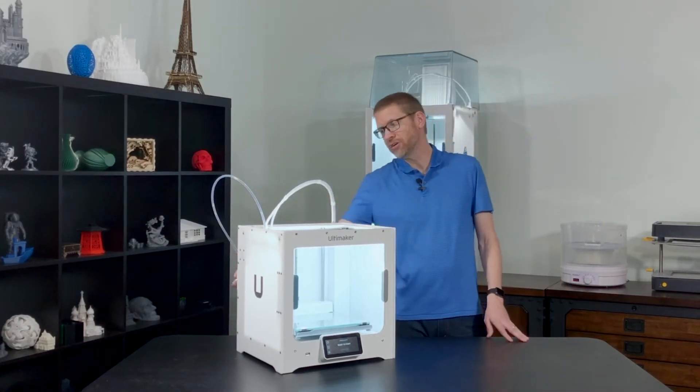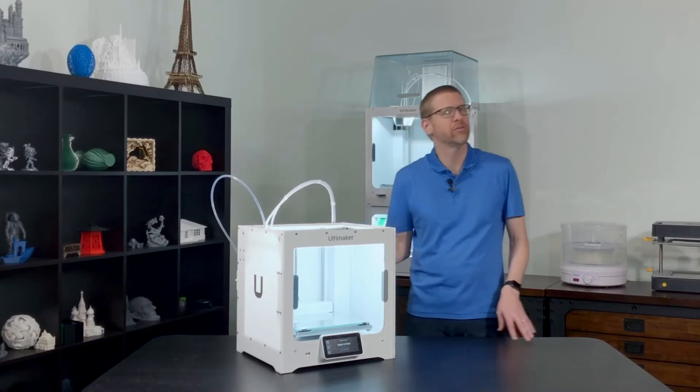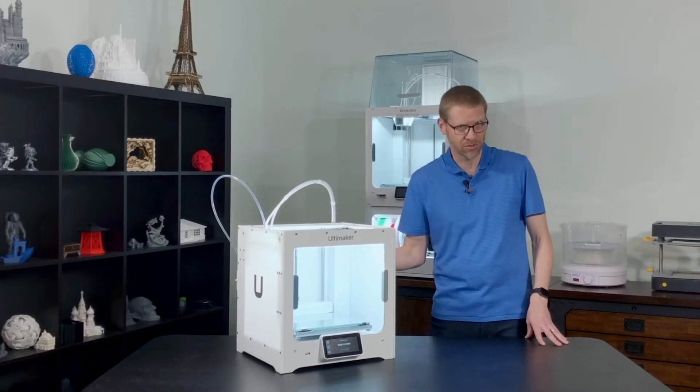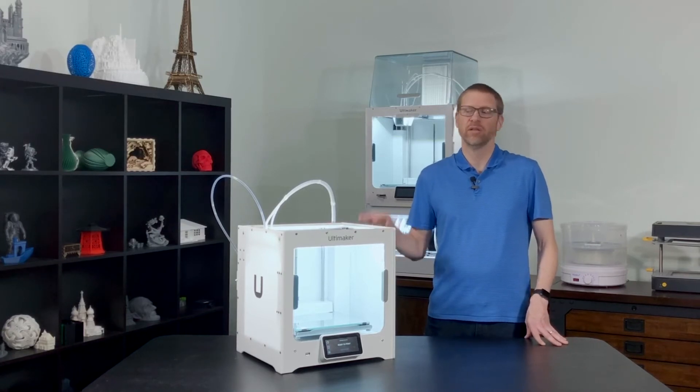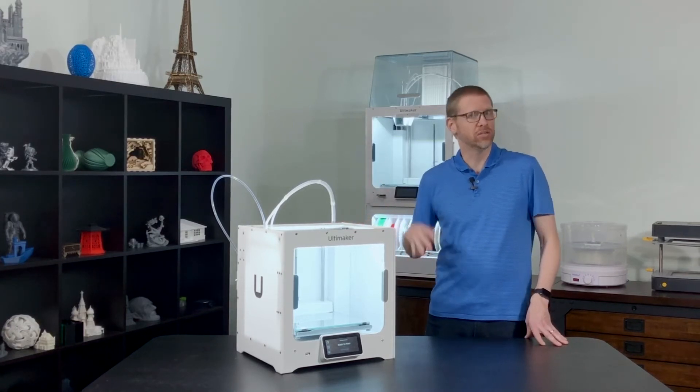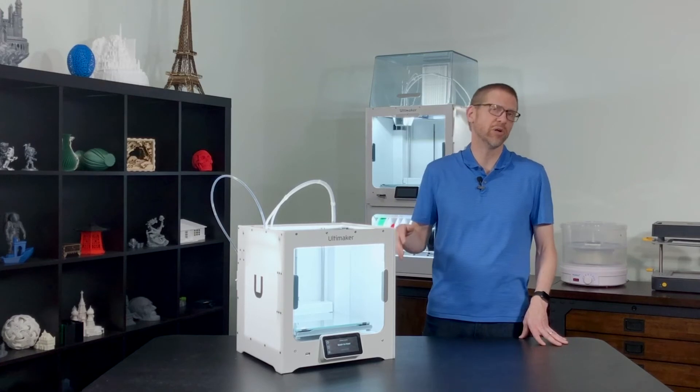On the back you've got dual feeders, just like the Ultimaker 3, but now they have incorporated the filament flow sensors, just like on the S5. So if one of your materials runs out mid-print, the printer will automatically pause, let you load a new material, and then continue where you left off.